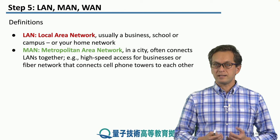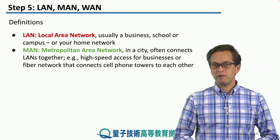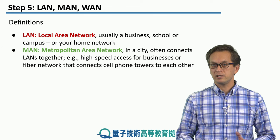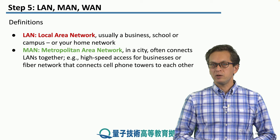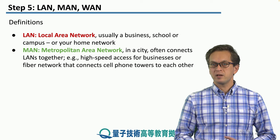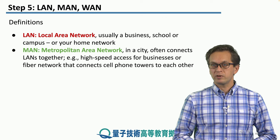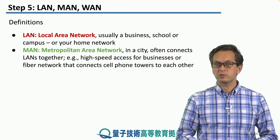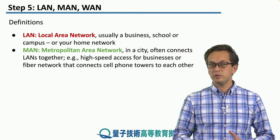Then the next step up is the Metropolitan Area Network. This is your network that covers the area of a city, and it often connects multiple LANs together. For example, it provides high-speed access for businesses or a fiber network that connects cell phone towers to each other.